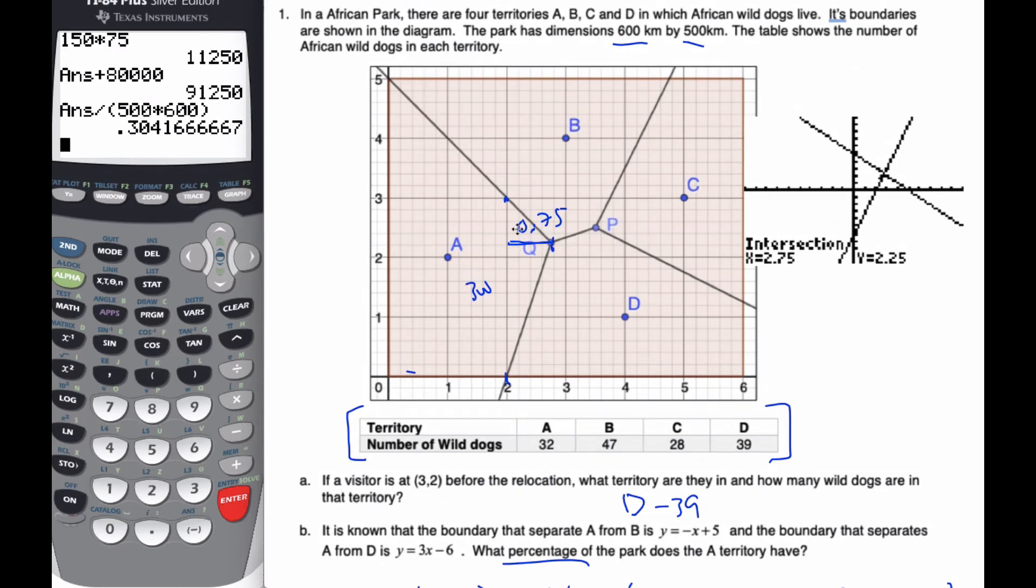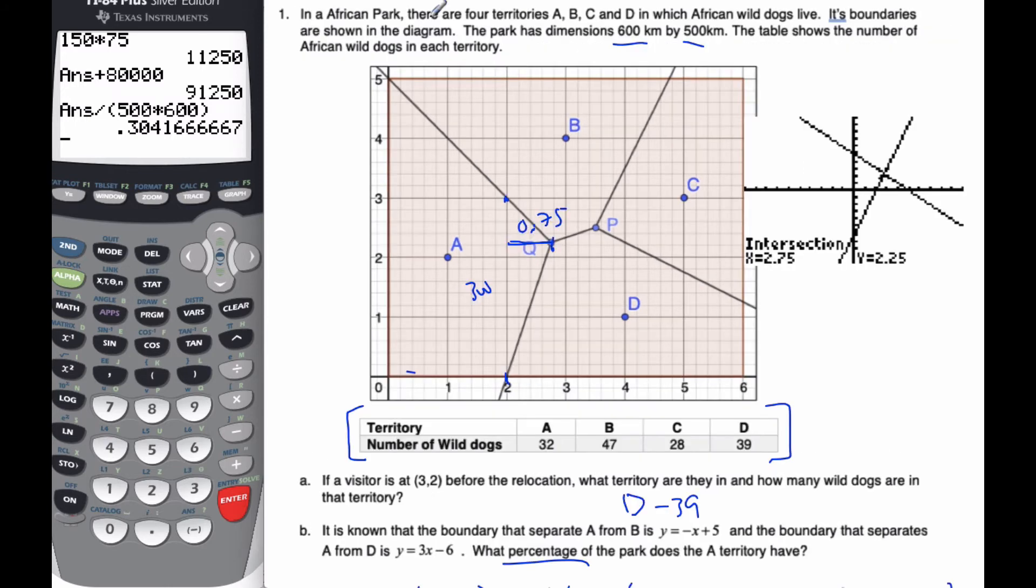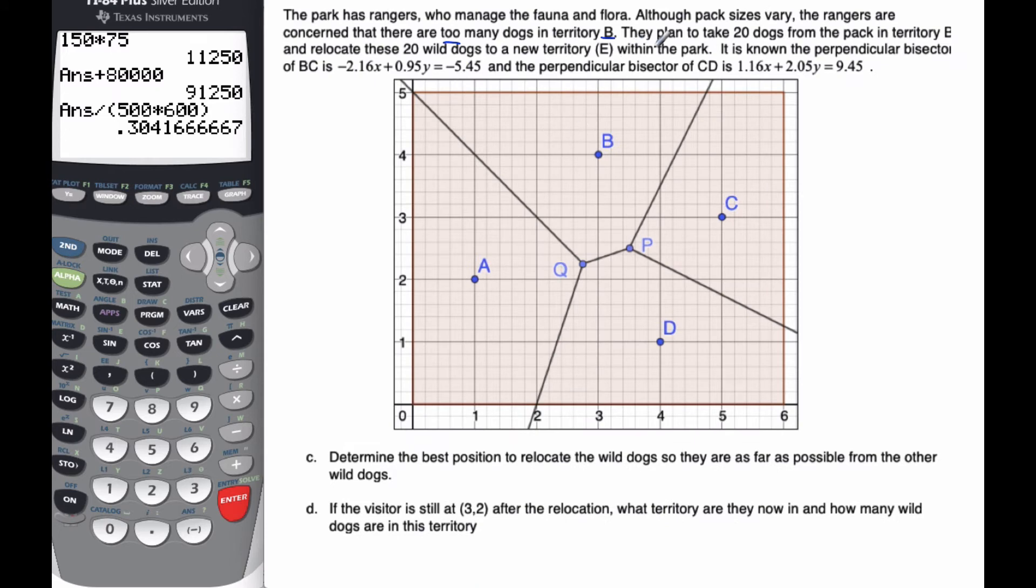We have to use the coordinates and our geometry to find these. The calculator helps find the intersection points, but it gets quite detailed without making careless mistakes. Continuing on to the second part, the park has rangers who manage the fauna and flora. Although the pack sizes vary, the rangers are concerned there are too many dogs in Territory B. They plan to take 20 dogs from that pack and relocate them into a new Territory E within the park. The perpendicular bisector of BC is this equation, and the perpendicular bisector of CD is this equation.